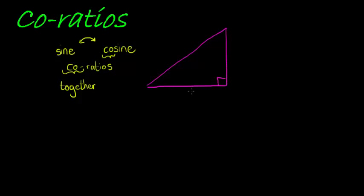So if this is 90 degrees, then this angle and this angle will add up to 90, so that the interior angles are equal to 180. So this plus that will be 90 degrees. Whenever we have angles that add up to 90 degrees, they are called complementary angles.